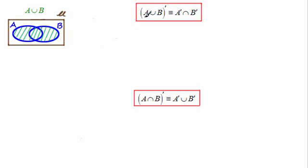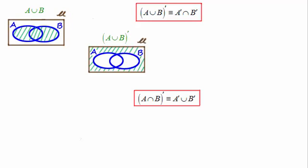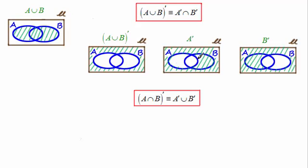And so if I complement this that'd be everything outside that set. So you're going to get something like this. Okay now if I look at A complement and B complement that's everything outside of A for A complement. And for B complement everything outside of B.